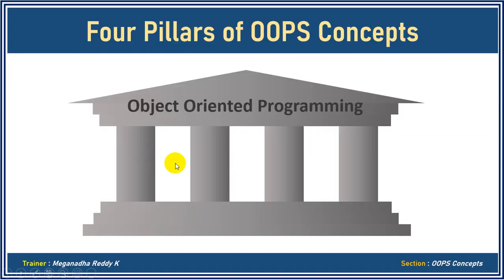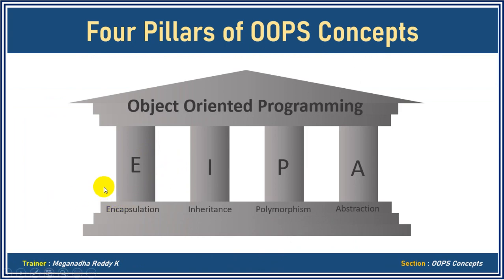The first one is encapsulation. The second one is inheritance. The third one is polymorphism. And the fourth pillar is abstraction. So encapsulation, inheritance, polymorphism, and abstraction — these are the four main pillars of object-oriented programming.